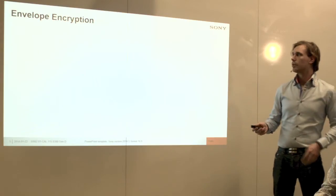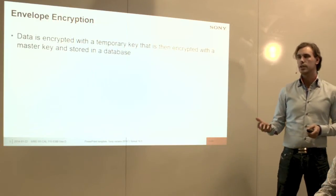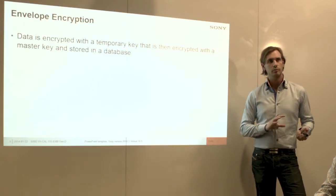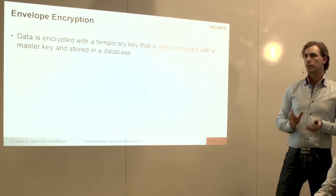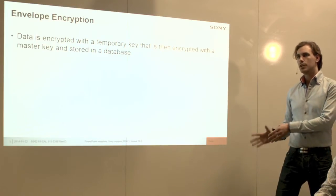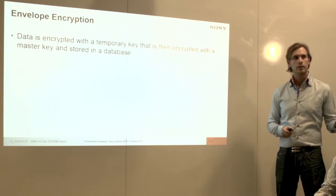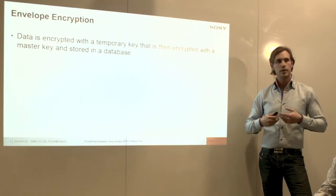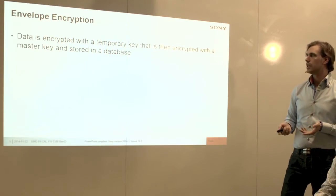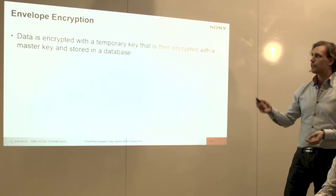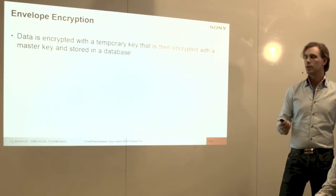When we do manual encryption, there is a strategy called envelope encryption, which is basically that you encrypt your data with a key — most often a temporary key. It can be a data-object-specific key or a key that rotates around the system. We use a temporary key, encrypt our data, and then encrypt the temporary key with another encryption key. We store the encrypted encryption key somewhere else, either in a separate database or alongside the encrypted data. When we decrypt, we decrypt the encryption key with our master key, then use the decrypted key to decrypt the data.